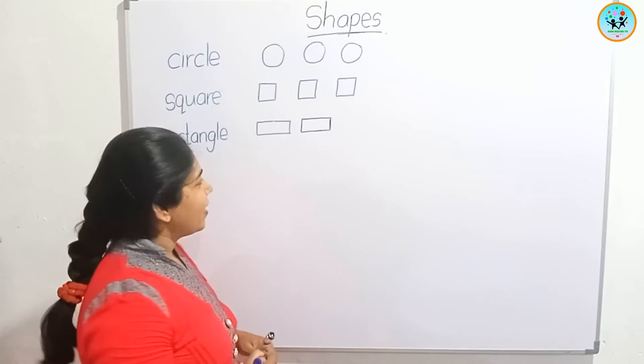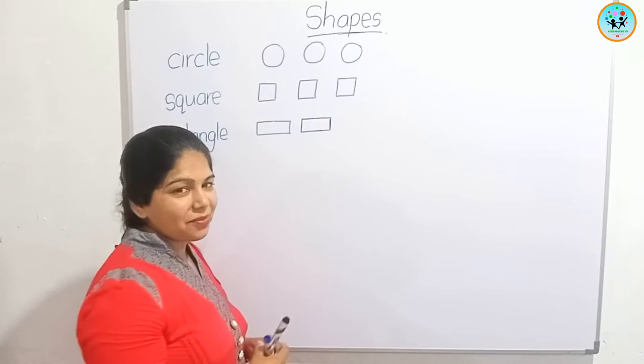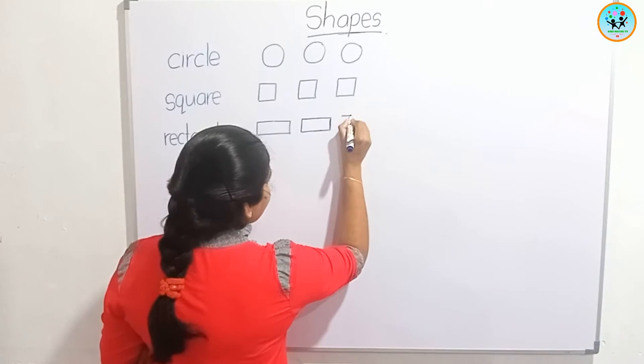How many sides are here? Four sides. How many sides are here? Four sides. Opposite sides are equal. We can draw rectangles like this.